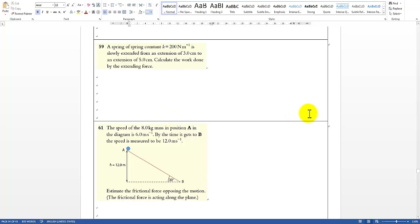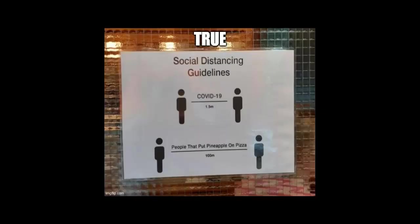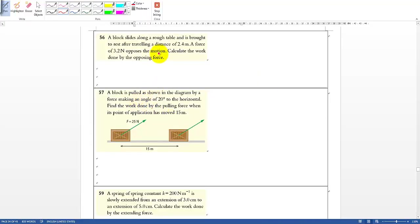Pause the video and we'll go through it together. So let's look at the first question. There's a block moving through a rough table, so there must be friction, and v is zero at the end, traveling through a certain distance. The force opposes the motion. Calculate the work done by the opposing force. I think there's nothing special, just apply the work done equation F times S or D, and multiply them together because they are running in the same direction.